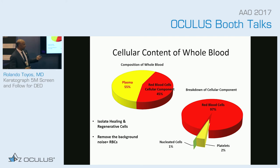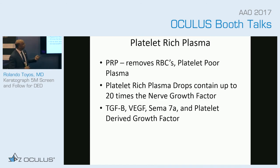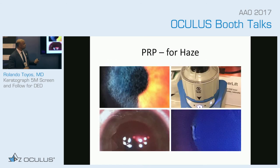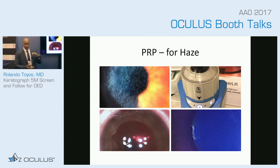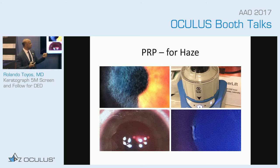We take about 60 cc's of blood and only get about six cc's of PRP. We make it into a drop and patients use it for about three months. It provides 20 times the nerve growth factor and 20 times the anti-inflammatory mediators. These PRP machines are getting better and smaller — my PRP machine now is about this big, it looks like a margarita shaker. You throw some blood in, it high-spins, and within four minutes you get PRP.